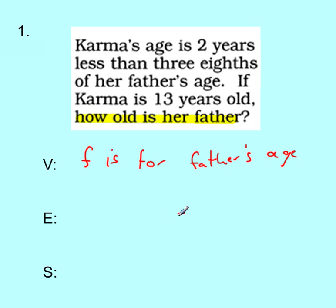Then we start building our equation. What does everything equal? Well, let's read the rest of the problem. Karma's age is two years less than three eighths of her father's age. Karma is 13 years old. So 13. And what equals 13? Two years less than 3 eighths of her father's age. So we need 3 eighths of her father's age, and then we're going to subtract 2.